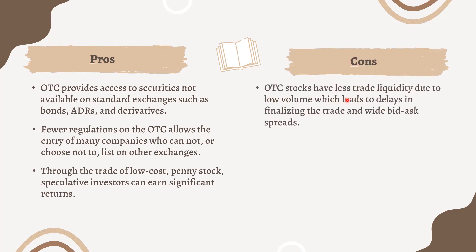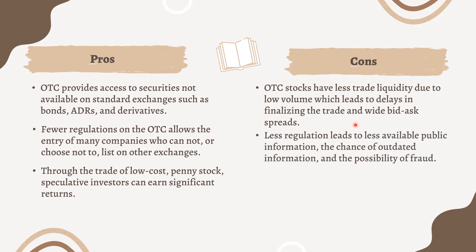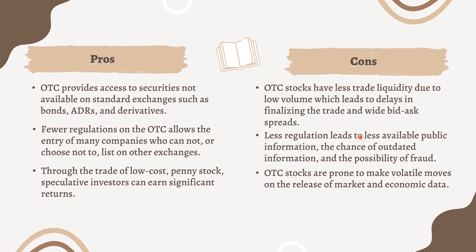On the downside, OTC stocks have less trade liquidity due to low volume, which leads to delays in finalizing trades and wide bid-ask spreads. Less regulation leads to less available public information, the chance of outdated information, and the possibility of fraud. OTC stocks are also prone to making volatile moves on the release of market and economic data.